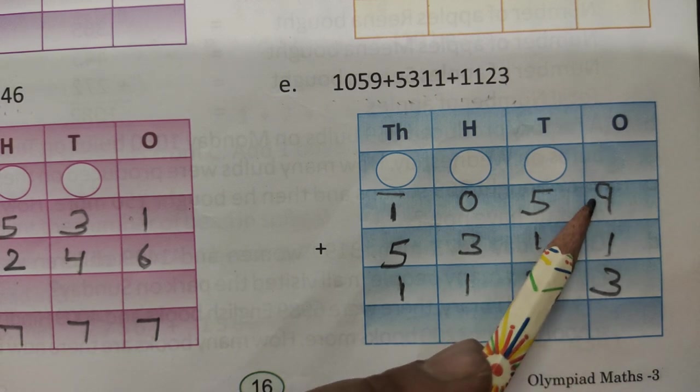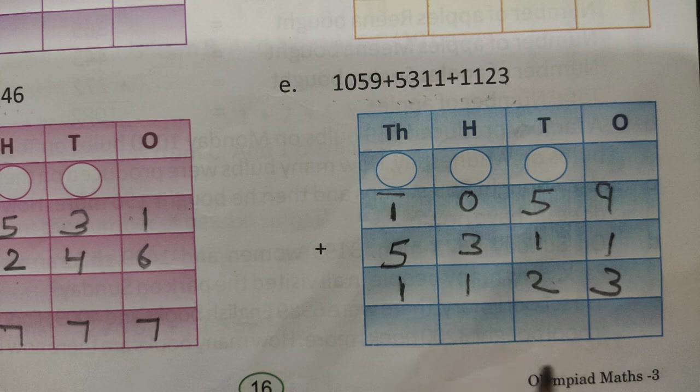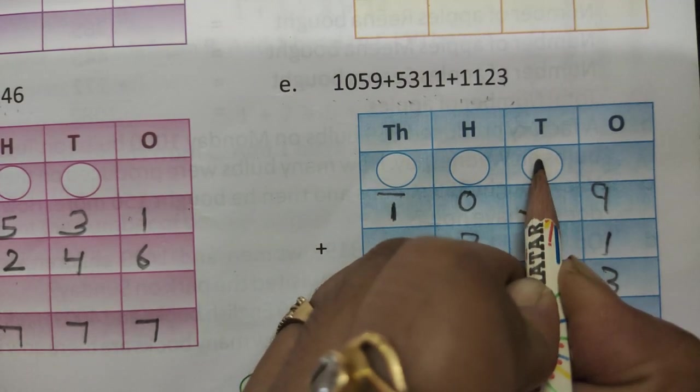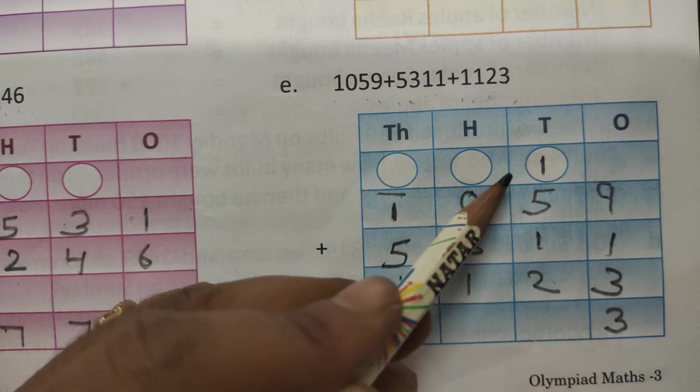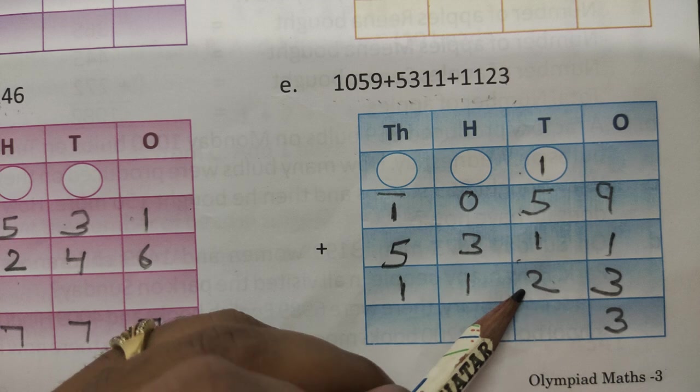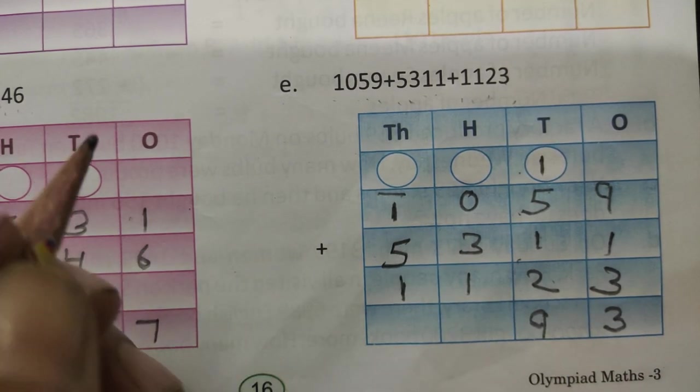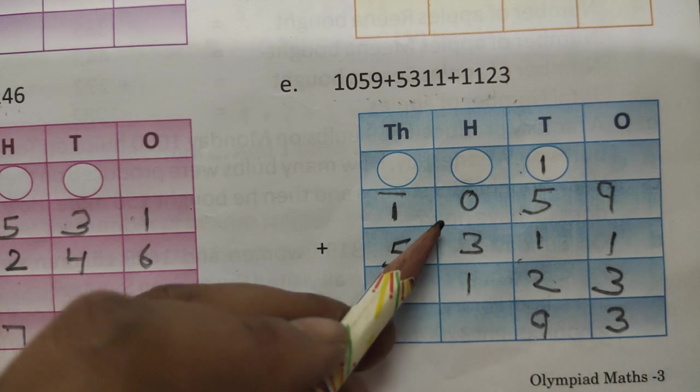Add the number is 9, 1 and 3. Count the number: 9 and 1 is 10, 10 and 3, 10 plus 3 is 13. 3 is 1's place, 1 carry over 10's place. Let's start adding this number: 1 and 5 is 6 and 1 is 7 and 2 is 8, 9.